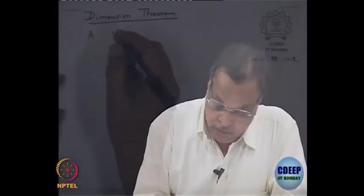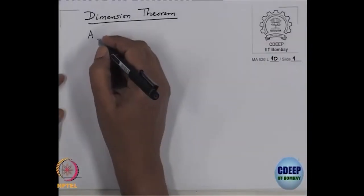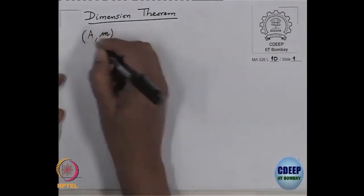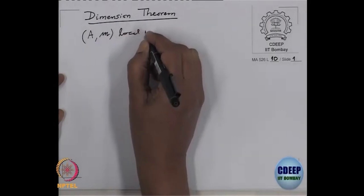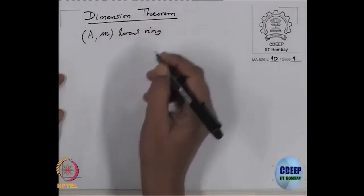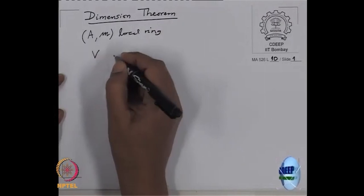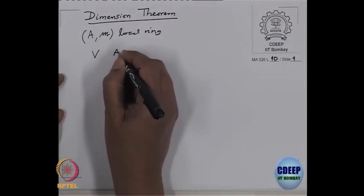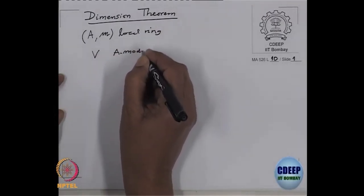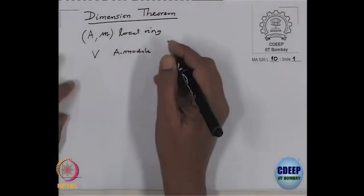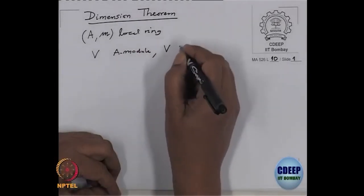Today I will prove what is called the Dimension Theorem, and I want to prove it for modules. So let us set up the notation. We have a ring A; A is a local ring, and V is an A-module. We will assume V is a finite A-module.